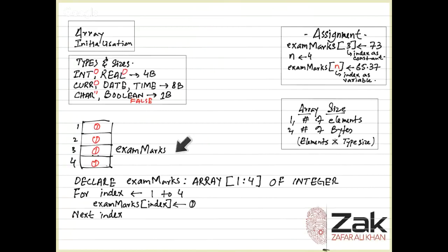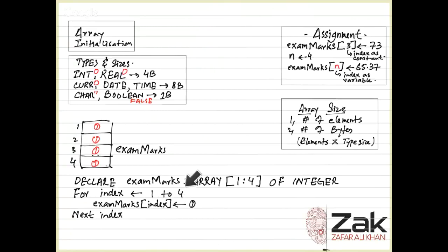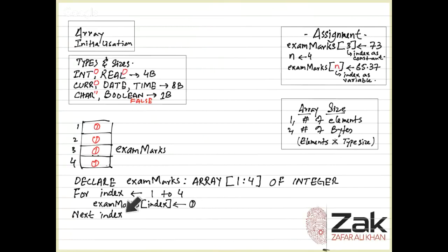Let's declare and initialize this array. Since it is integer it will be initialized to 0. DECLARE ExamMarks : ARRAY[1:4] OF INTEGER. Then FOR index = 1 TO 4, ExamMarks[index] ← 0, NEXT index. When the loop starts index will be 1, so ExamMarks[1] gets 0. Then index becomes 2, ExamMarks[2] gets 0, then ExamMarks[3] gets 0, then ExamMarks[4] gets 0. That is how we declare and initialize a single dimensional array.